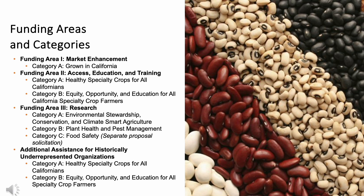CDFA has three funding areas: market enhancement, access, education, and training, and research. Within each funding area, there are one or two funding categories, and applicants must select the funding category most appropriate for their project. Each funding category contains several program priorities, and projects must address at least one of the program priorities listed under the selected funding category. For example, if an applicant determines their project best fits in research category A — Environmental Stewardship, Conservation, and Climate Smart Agriculture — they will need to select at least one program priority within that funding category.